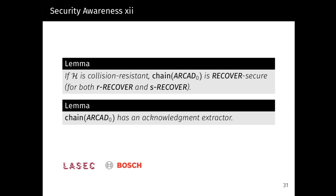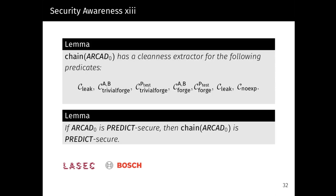We can now show that if H is a collision-resistant hash function, our Chain-RCAT construction is RECOVER secure for both r-RECOVER and s-RECOVER security. It's also easy to see that our construction has an acknowledgement extractor. Furthermore, we can also show that our Chain-RCAT scheme has a cleanness extractor for a group of cleanness predicates. For the full definition of those predicates, I refer the listener to the full paper. And finally, we can show that if RCAT_0 is PREDICT secure, then our Chain-RCAT construction is also PREDICT secure.